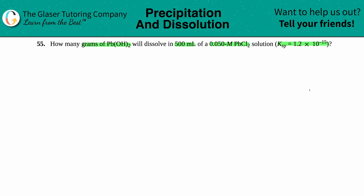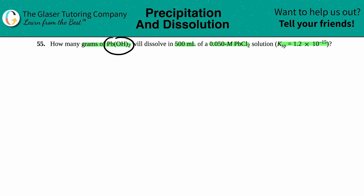We're asking how many grams will dissolve — when dealing with Ksp values, solubility product, we're talking about a compound that can either precipitate or dissolve. The Pb(OH)₂ is the compound that has the Ksp value attached to it.